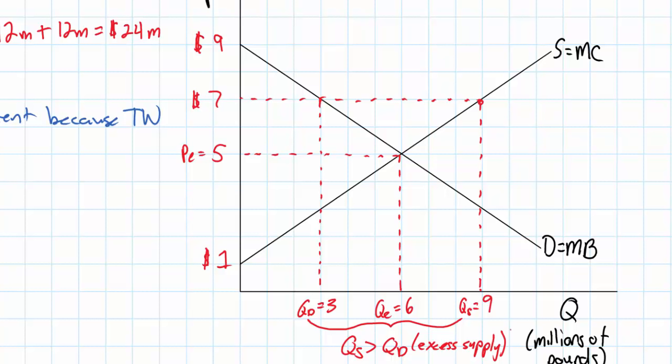The first thing to notice is that this is an inefficient outcome because the quantity supplied is greater than the quantity demanded — we have an excess supply, otherwise known as a surplus, and this is not the good kind. Too much beef is being produced. We can also analyze this by looking at marginal benefit and marginal cost: at nine million pounds of beef, the marginal cost is greater than the marginal benefit. The cost to society of the nine millionth pound of beef is greater than what consumers are willing to pay for it.